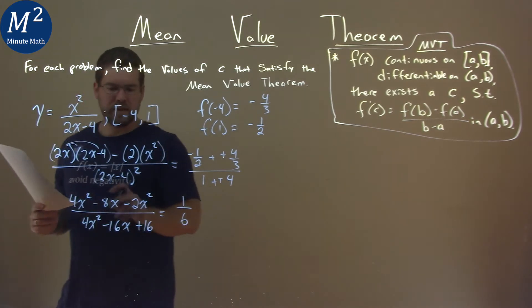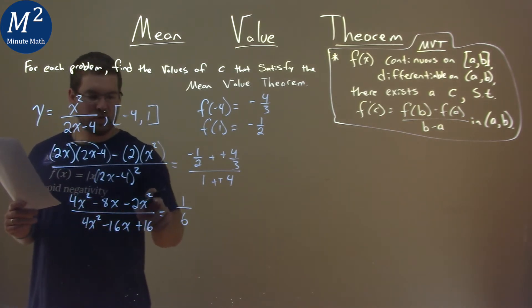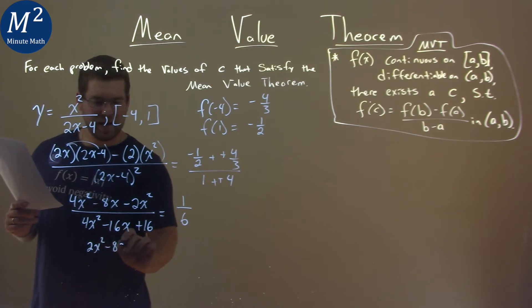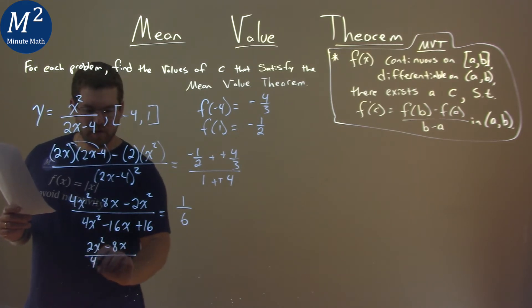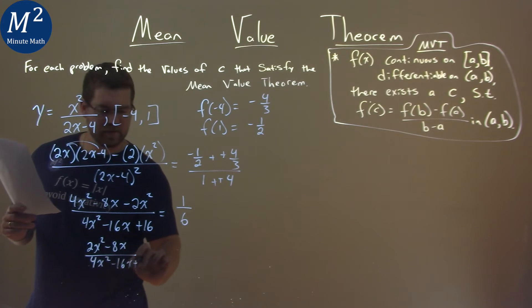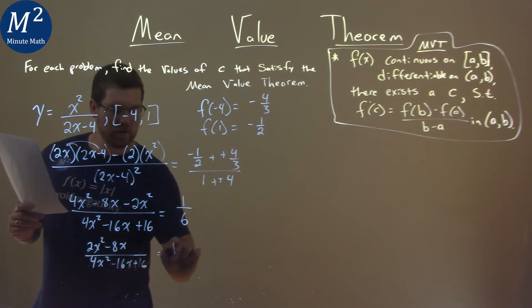From there, let's go simplify this left-hand side a little bit more. 4x squared minus 2x squared is 2x squared. So, we have 2x squared here minus 8x over 4x squared minus 16x plus 16, equals 1 over 6.